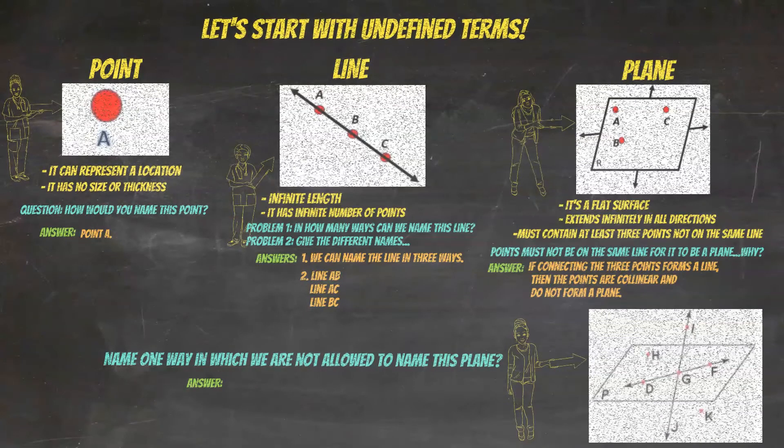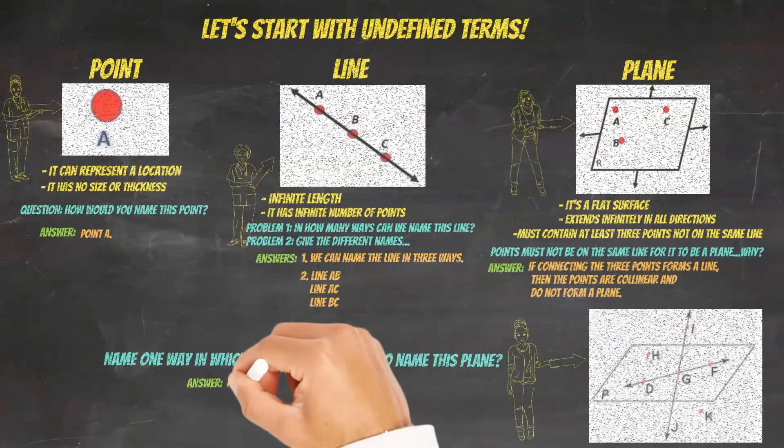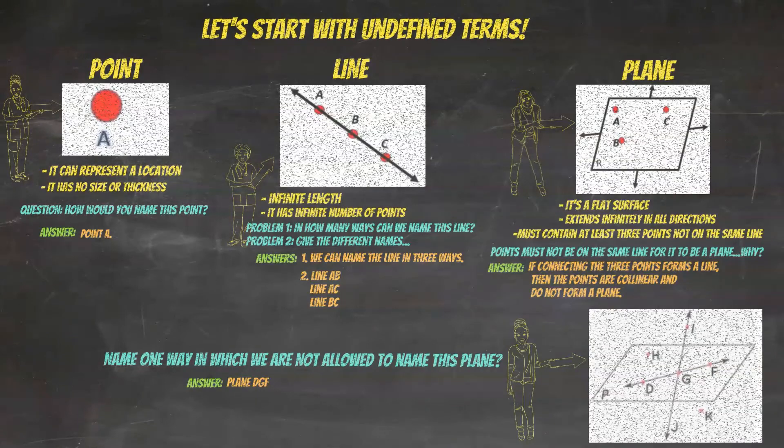The last question, the answer is, one way in which you cannot name this plane is plane D, G, F. Why? Look at the diagram. Points D, G, and F are on the same line. So that's actually a line. Those points are collinear.